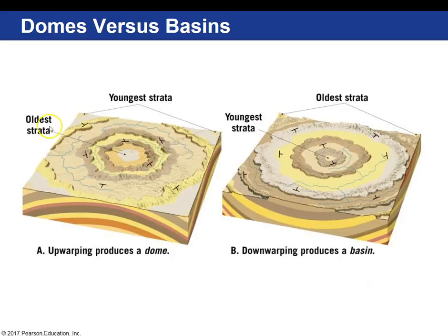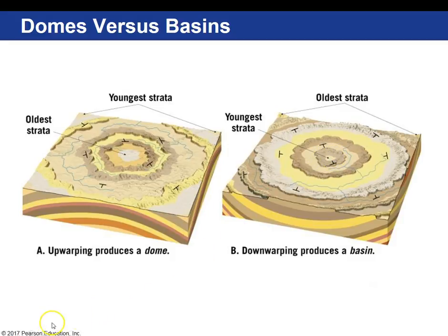In a dome, the rock layers are all dipping away from the center of the dome. A basin is a down-warping, and the rock layers are dipping toward the center, and the youngest material is in the center of the basin as well.